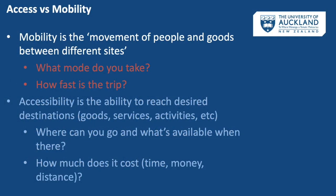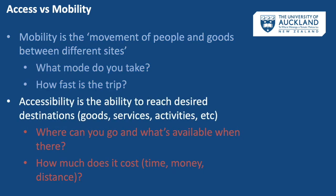Accessibility and mobility are two very common terms in both transportation planning and engineering — they are frequently confused and often misunderstood. Mobility is the movement of people and goods between different sites. When thinking about mobility, you think of questions like: what mode do you take, and how fast is the trip? Accessibility, on the other hand, is the ability to reach desired destinations.